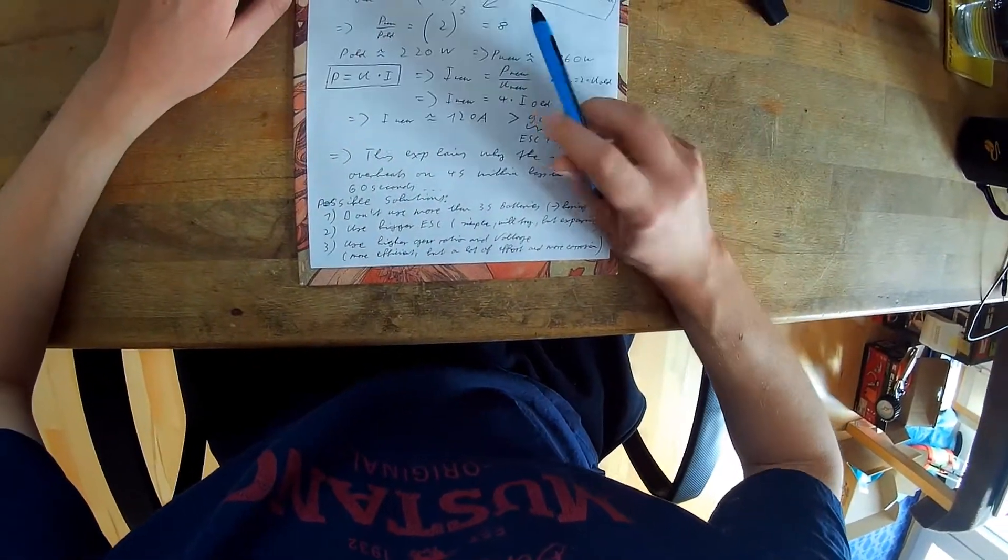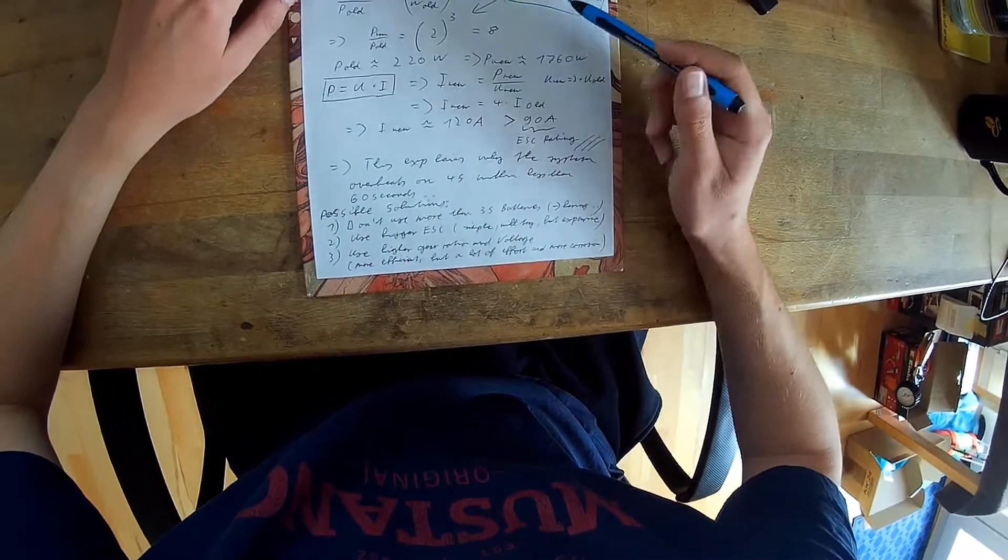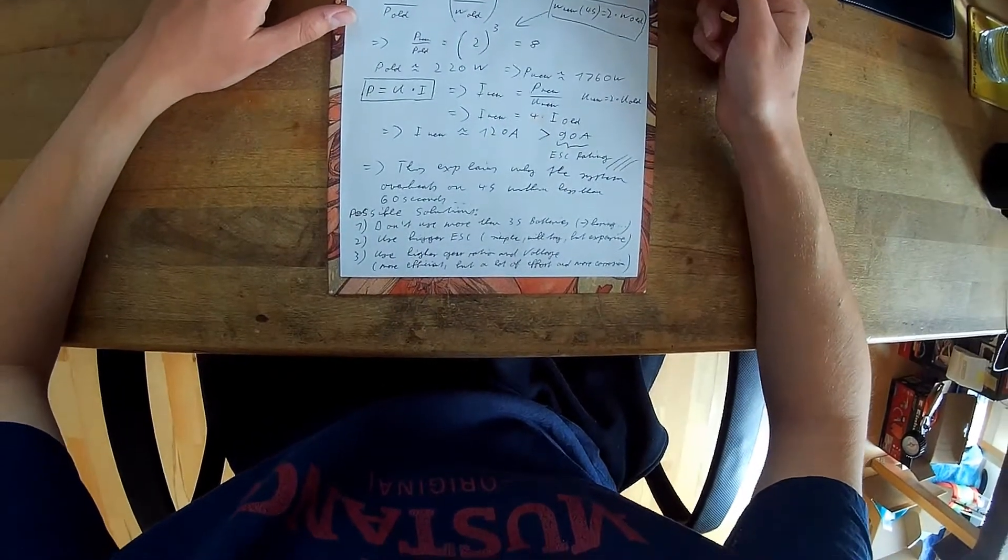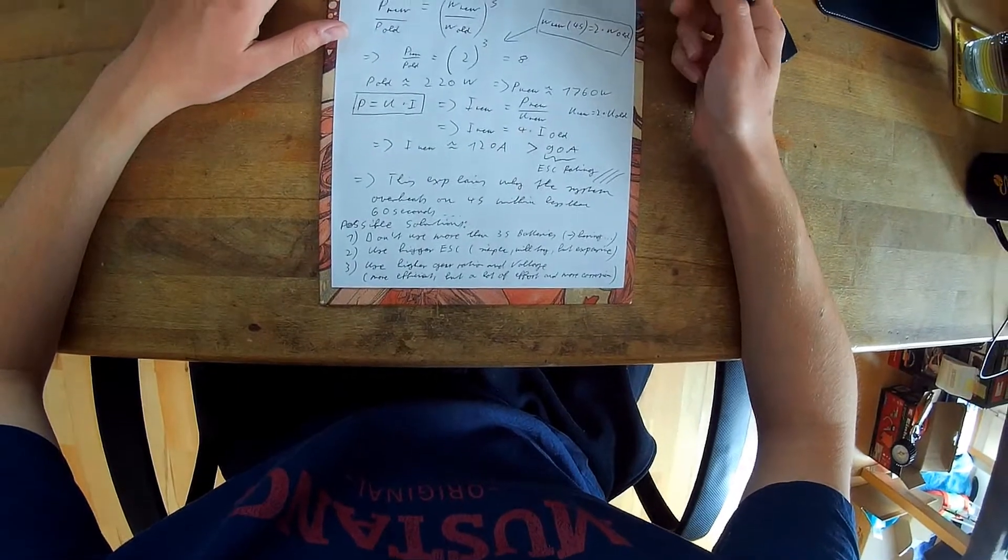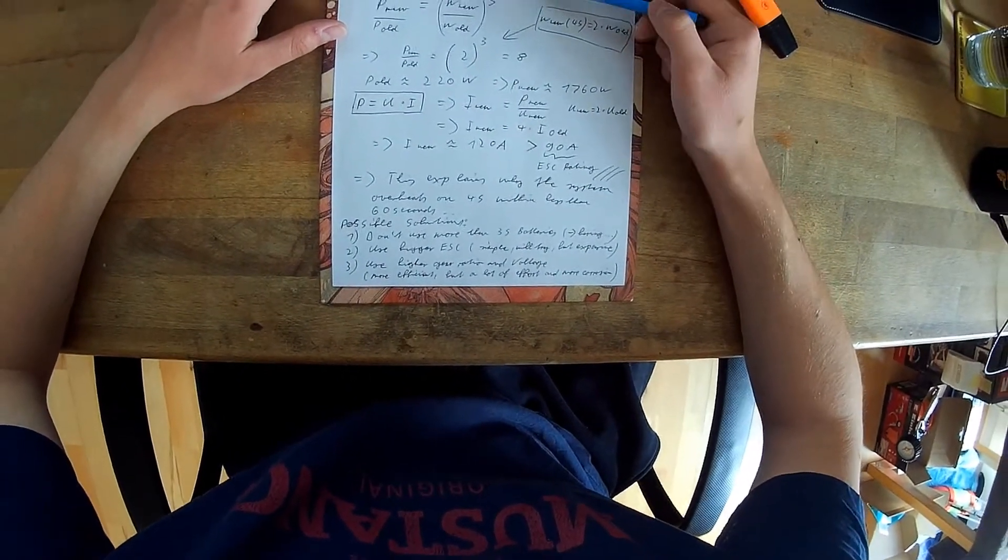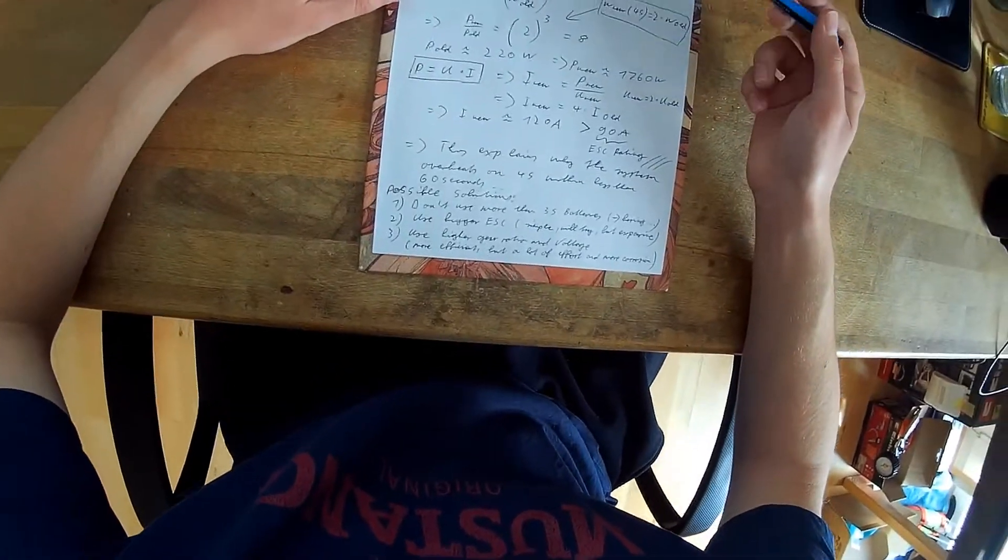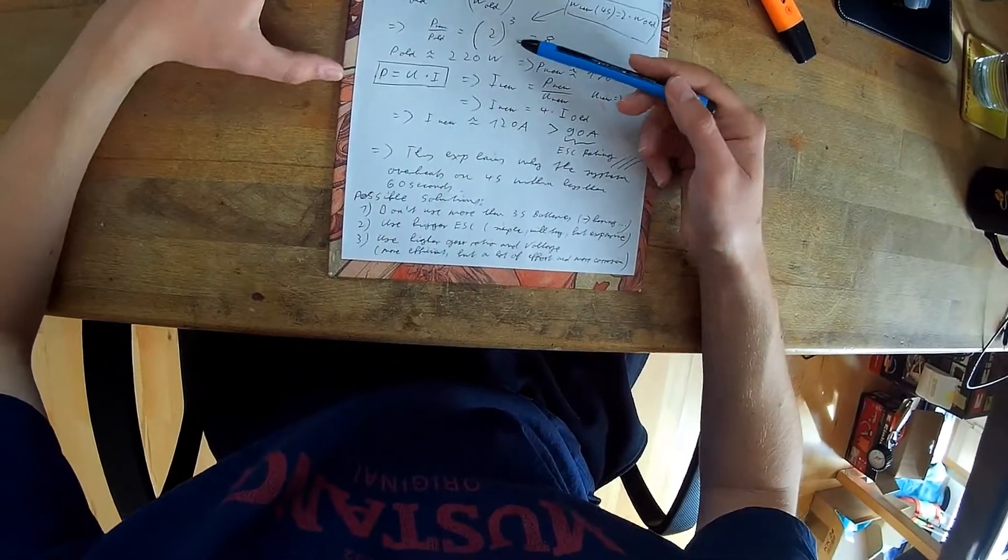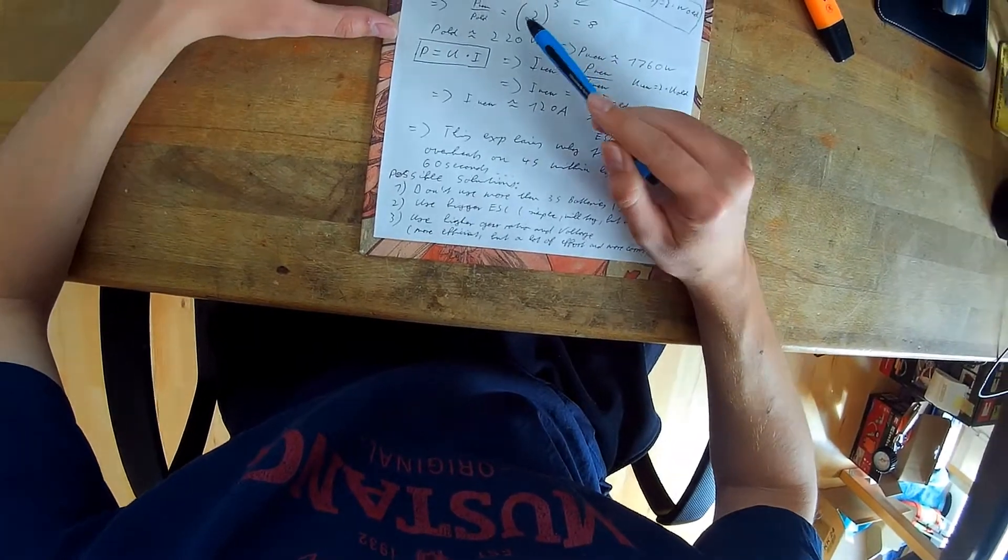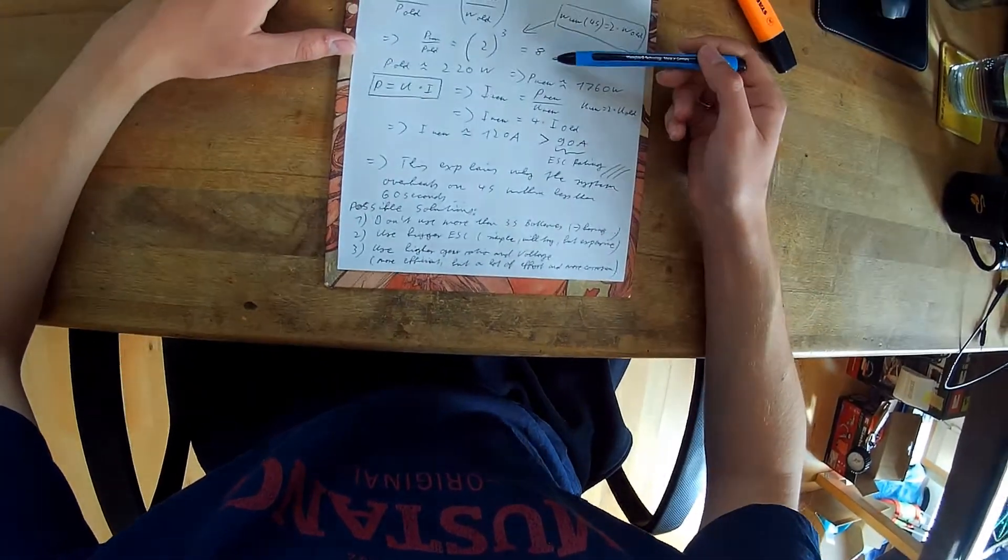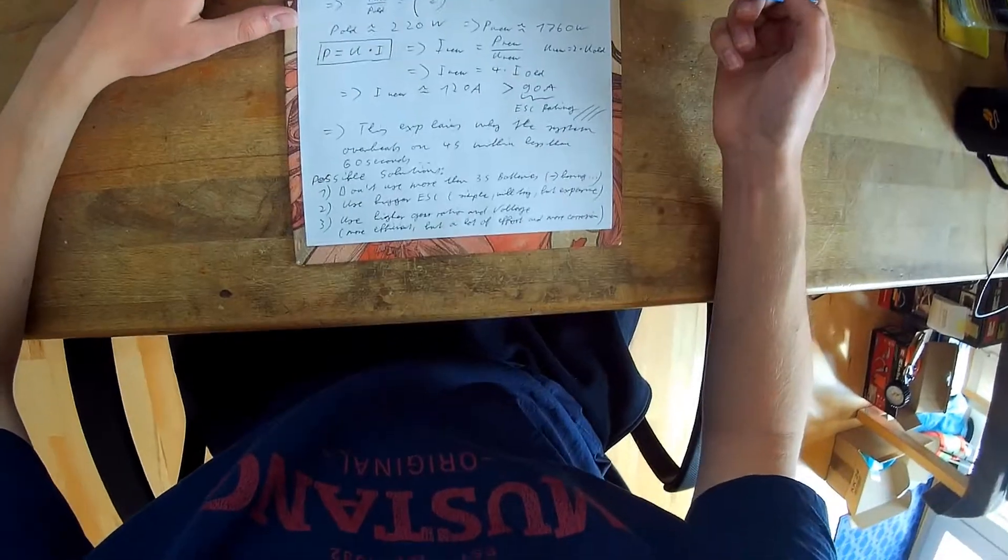When we say that the new voltage, let's say we want to use a 4S battery instead of a 2S, we know that the RPM, the new RPM, will be about double the old RPM. So we can put that into our equation and we get that with double the voltage, we will draw about 8 times the power.